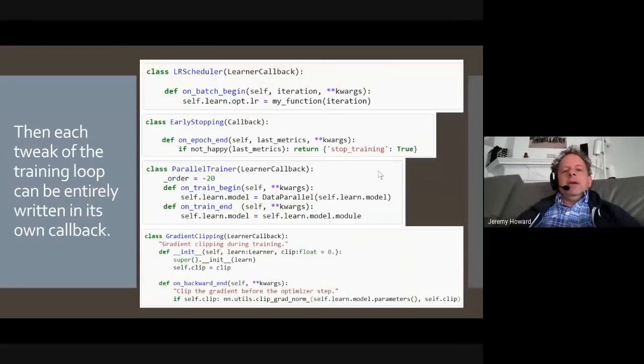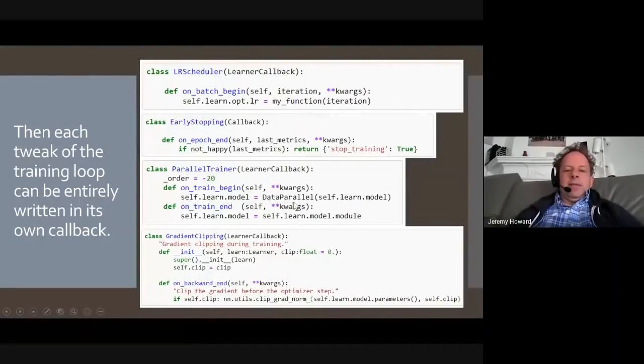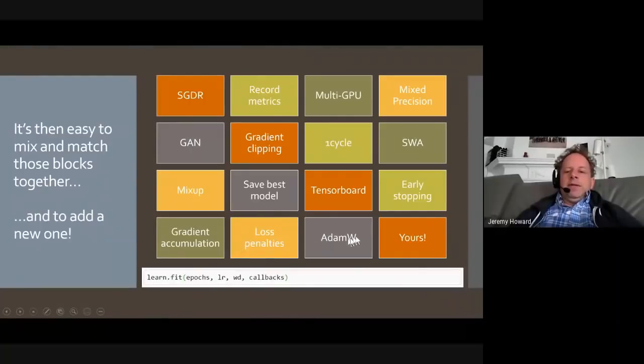So that means, for example, if you want to do a scheduler, you can define a batch begin that sets the optimizer's learning rate to some function. Or if you want to do early stopping, you can write an on epoch end that checks the metrics and stops training. Or you can do parallel training, set up data parallel, and be happy at the end of training, take data parallel off again. Gradient clipping, you have access to the parameters themselves, so you can clip the gradient norms at the end of the backward step, and so forth.